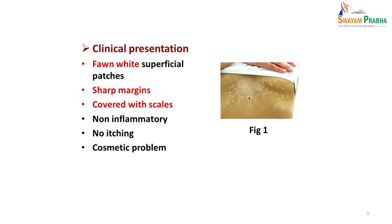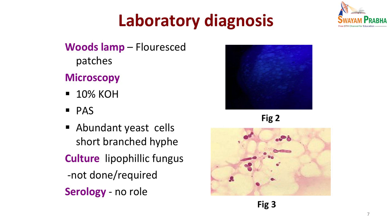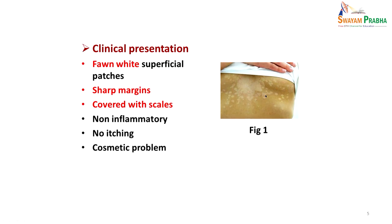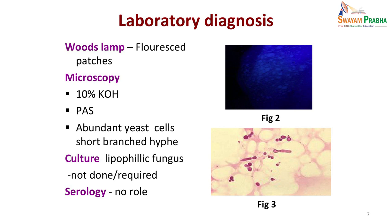On examination, there were fawn and white superficial patches seen on the back and other areas of skin with sharp margins. When rubbed with a slide or by hand, dry white scales came out. These were non-inflammatory and non-itching — basically a cosmetic problem. When this area of skin was exposed to a UV Wood's lamp, the patches fluoresced, suggesting a fungal infection.